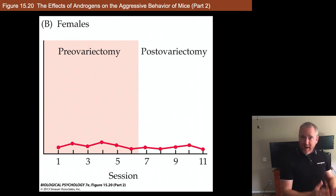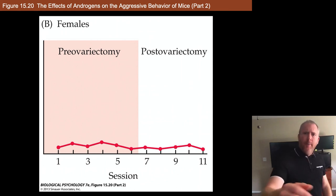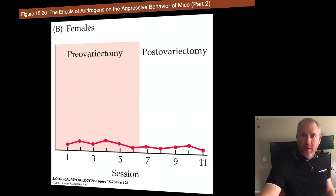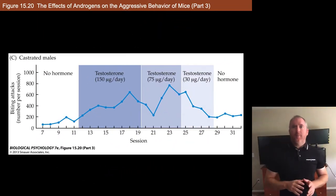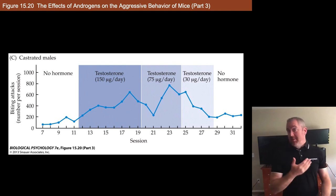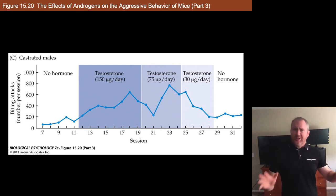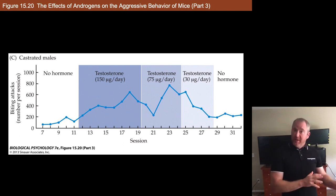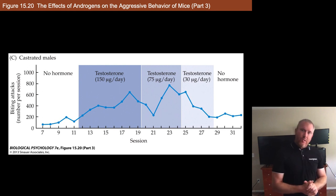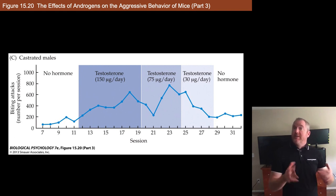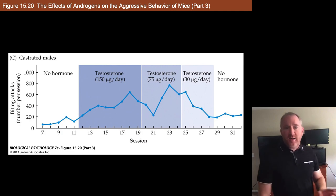Here the dependent measure was biting attacks, so females wouldn't show many. Whether ovariectomy influences other forms of aggression is a more open-ended question. Going back to males and biting attacks: one question is whether removing the testes does all sorts of things — maybe they're just depressed and not wanting to interact. What happens if you take a castrated monkey and give them testosterone? You can see from the graph that testosterone alone is sufficient to restore biting attacks in male monkeys, suggesting that in non-human primates there's a very clear relationship between increases in testosterone and increased aggression.